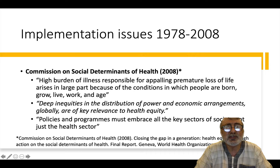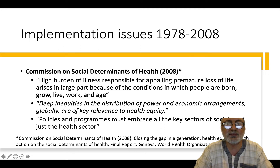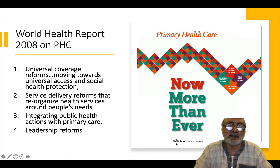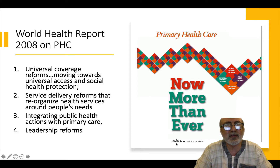The Commission on Social Determinants of Health, which was in 2008, spoke of the key idea that we are not really winning, and that lots of the primary health care challenges, particularly the social determinants of health, lie in the deep inequities in the distribution of power and economic arrangements globally. So you can see that there has been a lot of battling between selective and comprehensive primary health care across these 30 years, before the World Health Report of 2008 on primary health care came on the scene.